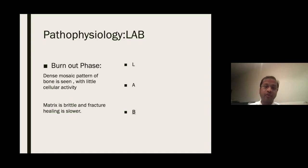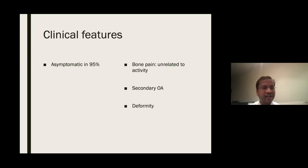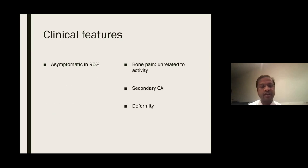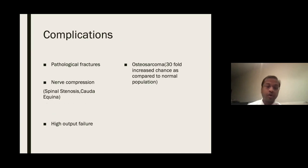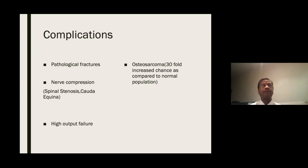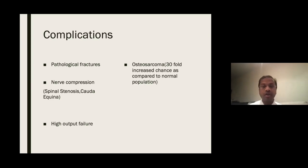It then turns into a Burnt-out phase, where you are left with a dense mosaic pattern of bone with little cellular activity. The matrix is brittle and fracture healing is slower. Clinically, most patients remain asymptomatic and are picked up late. They may have bone pain unrelated to activities, secondary osteoarthritis, and in younger age, deformities. Complications include pathological fractures, spinal stenosis, and rarely cauda equina syndrome. From a medical background, there is a high incidence of high-output cardiac failure, and a 30% increased risk of osteosarcoma compared to the normal population.